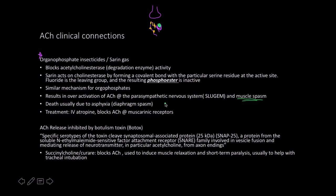This overstimulation produces the acronym SLUDGEM: salivation, lacrimation, urogenital, gastrointestinal, emesis (throwing up), and miotic pupils — your pupils will be constricted. People with this poisoning usually die due to asphyxia. The diaphragm is also regulated by acetylcholine, so it will start spasming and you lose control of your breathing rate. Eventually you'll die.